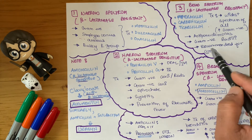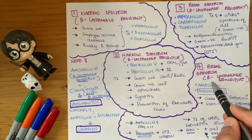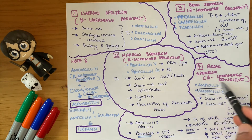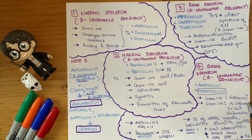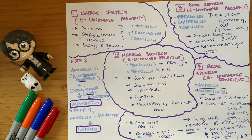The last group — saved for last because this is where dentistry lies — is broad spectrum beta-lactamase sensitive, including ampicillin and amoxicillin. They cover gram-positive enterococci, gram-negative H. influenzae, E. coli, and Salmonella. They are used for treatment of otitis media (ear infection), bronchitis, upper respiratory tract infection, sinusitis, and cystitis. Amoxicillin has higher oral absorption, higher blood levels, a longer half-life, and decreased GI activity.